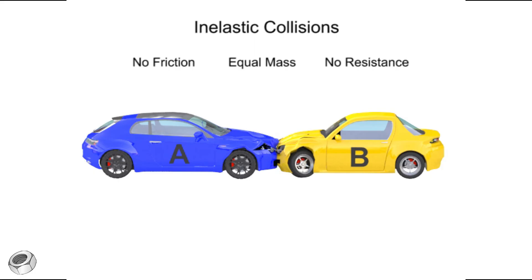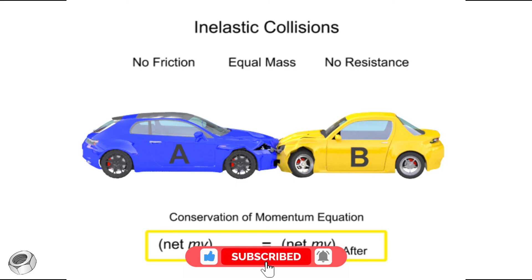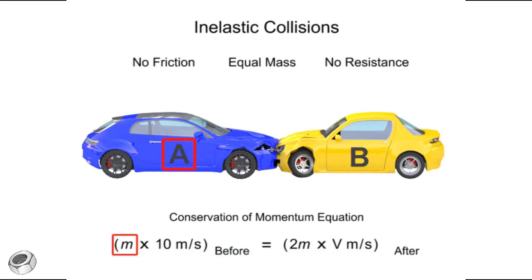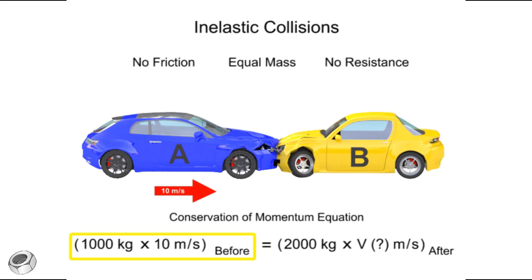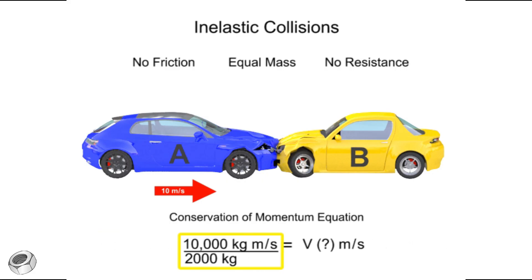The after-collision momentum is easily calculated using the conservation of momentum equation, where the mass of car A times its speed of 10 meters per second before the collision is equal to the mass of car A plus the mass of car B times the final velocity after the collision. Rearranging the equation to solve for the velocity after the collision gives 5 meters per second.